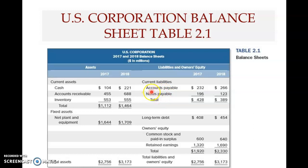Notes payable are short-term debt obtained from creditors with a note — a document, like a security — but it is usually not tradable; there is no secondary market for it. It is a proof of indebtedness, meaning the company owes the creditors. We can see here that this is 123 million dollars at the end of 2018, meaning the company owed 123 million dollars to its creditors in terms of short-term debt.